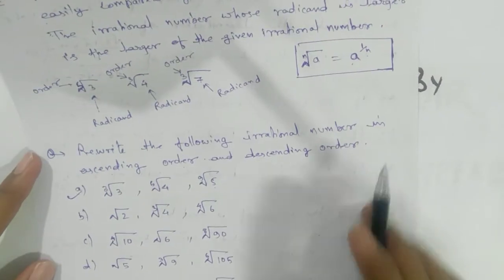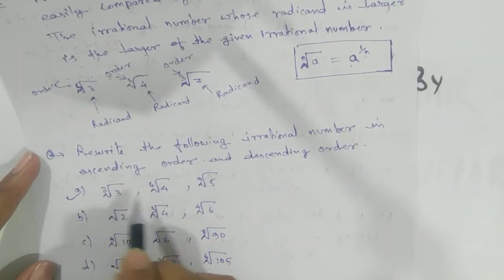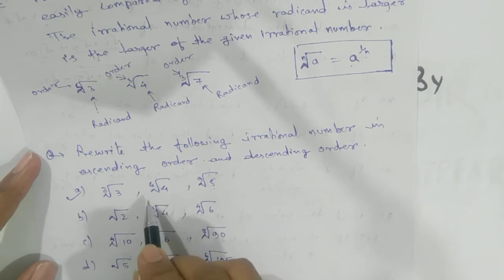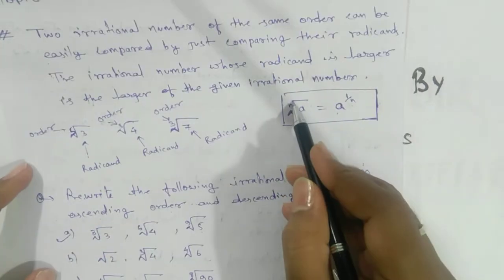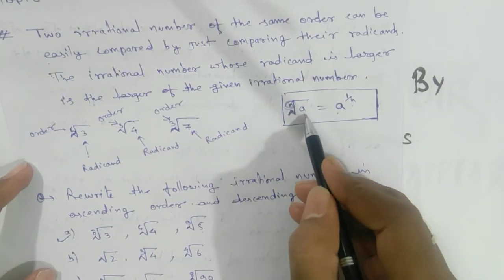To rearrange, you cannot say directly that this one is bigger or this one is bigger. First you need to see the order. This one is called order, the nth order. This one is order and this one is called radicant.